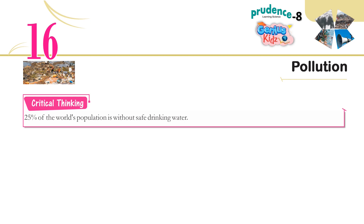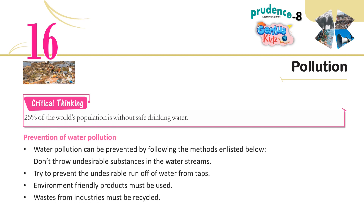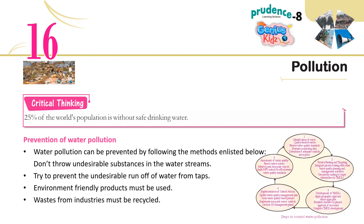25% of the world's population is without safe drinking water. Prevention of water pollution: Don't throw undesirable substances in the water streams; try to prevent undesirable runoff of water from taps; use environment-friendly products; recycle wastes from industries.